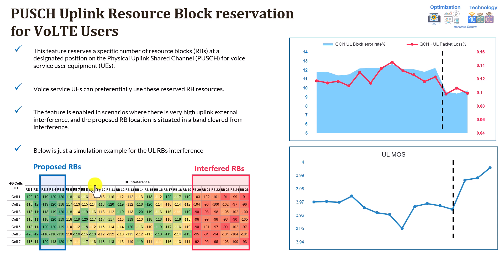The drawback is that as long as you're reserving those resource blocks for VoLTE users only, this might impact your peak throughput in general for the uplink, because those resources are all the time reserved for VoLTE users and cannot be used by data users. The main recommendation for such a feature is to use it on a scenario-based approach — for example, for particular cells where you have high uplink interference, or where you have huge congestion in the cells and you don't want to impact VoLTE users. It's not recommended to be deployed across a complete network.